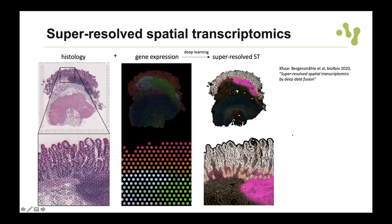I'd also like to show a really cool method called xFuse, developed by Ludwig Bergenstråle, another PhD student in our lab. It uses deep learning to combine histological information from the H&E image with gene expression data, learning to predict gene expression directly from an H&E image. What you get is what we call super-resolved spatial transcriptomics — allowing you to explore gene expression at single-cell resolution using this deep learning strategy.